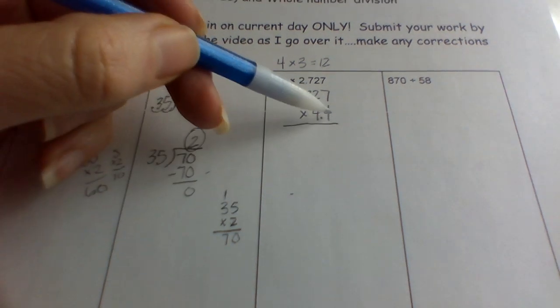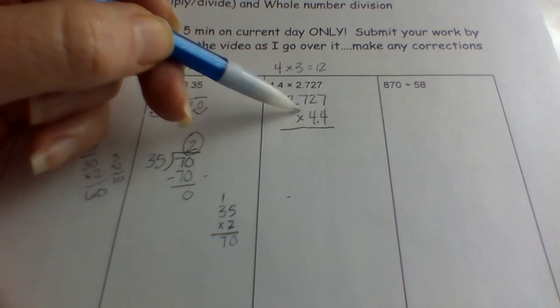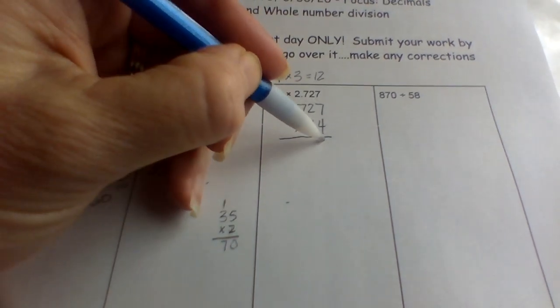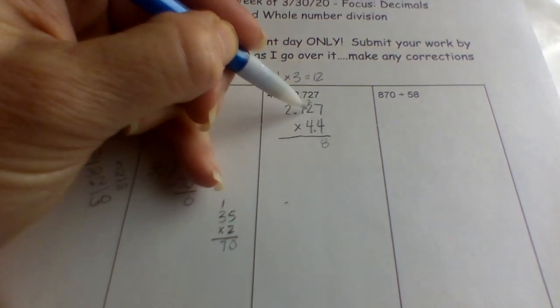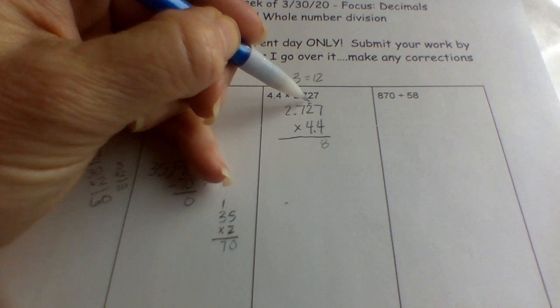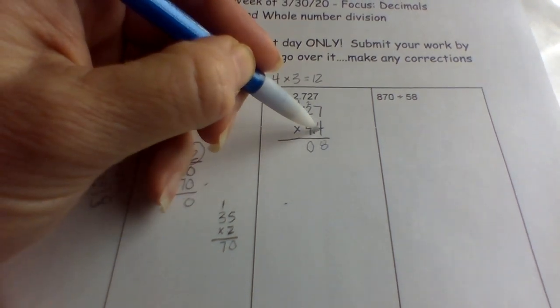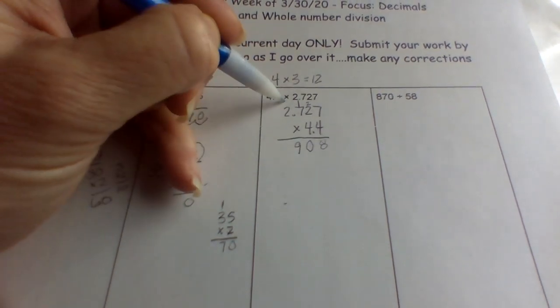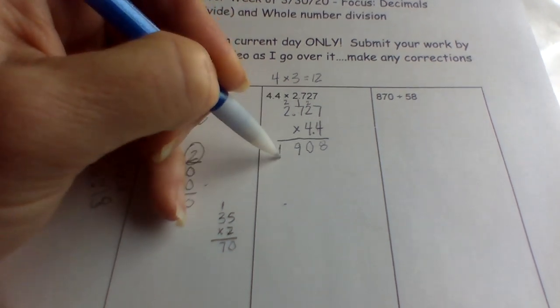So I'm always going to start on the right, and I'm going to do this number times each of these. Remember, this is kind of what's hardest about multiplication. So four times seven is twenty-eight, and I'm still multiplying, so I'm going to carry my two. Four times two is eight, plus two is ten. Carry my one. Four times seven is twenty-eight, plus one is twenty-nine. Carry my two. Four times two is eight, plus two is ten.